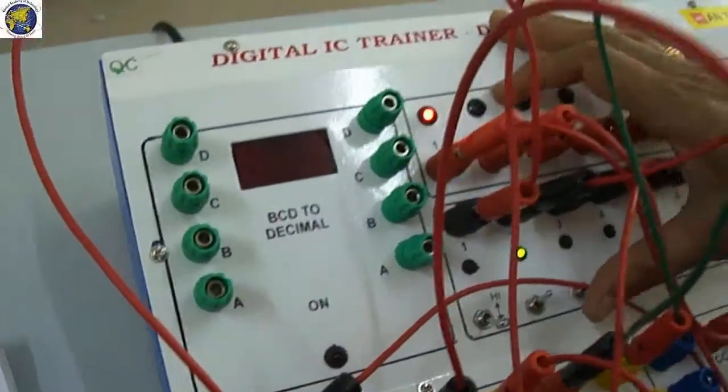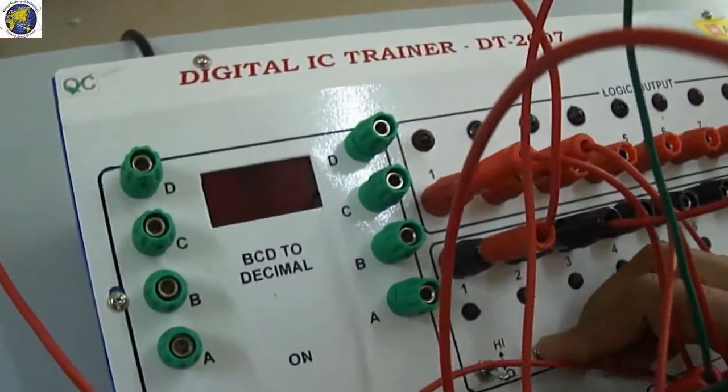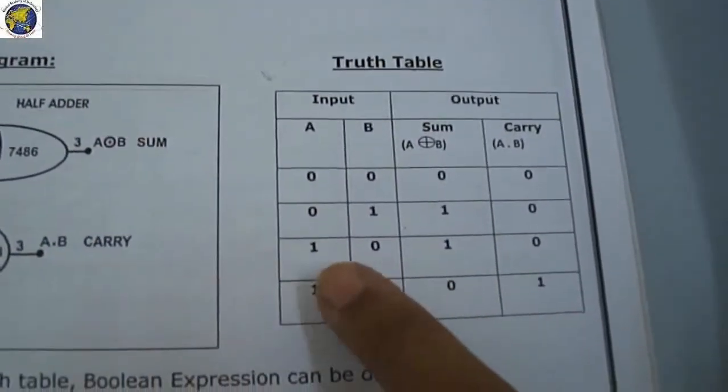The fourth condition is 1, 1. If both the inputs are 1, 1, you will get 0, 1. If both the inputs are 1, 1, you will get 0, 1.